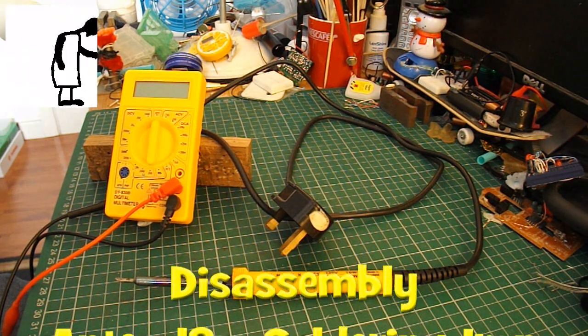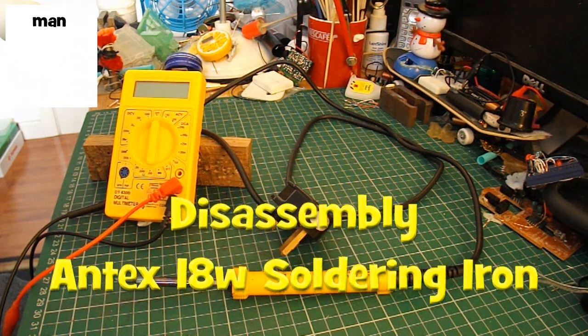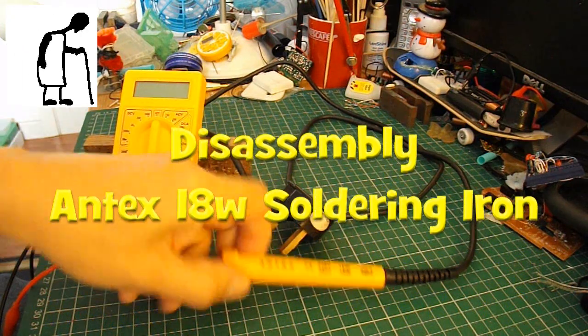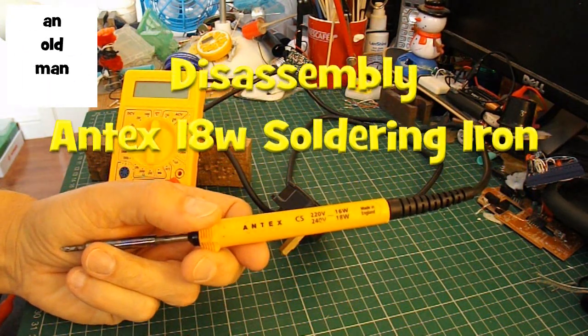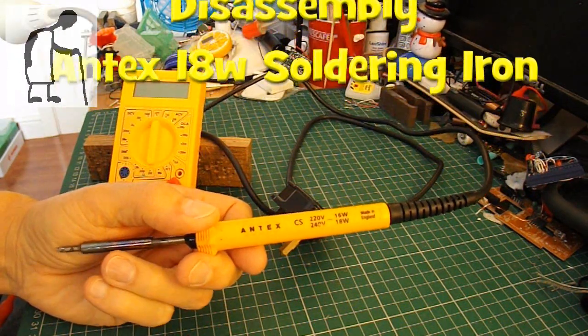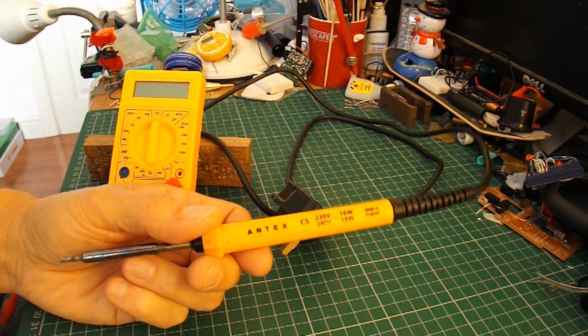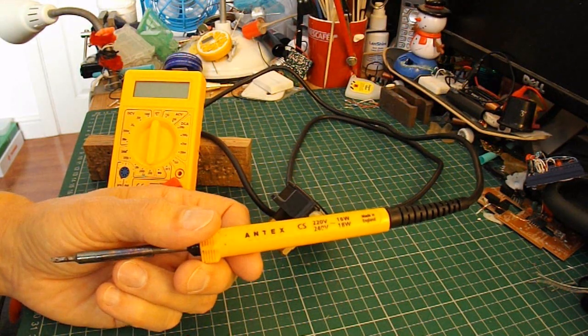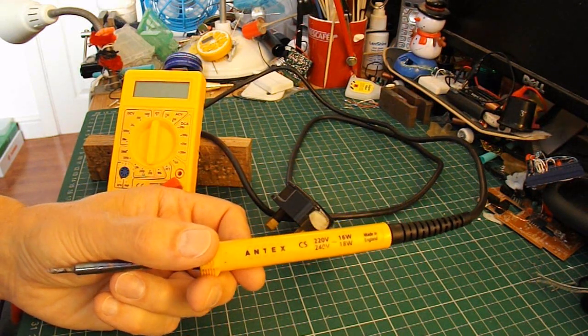Hi guys, I'm going to do a disassembly video. My favorite soldering iron has stopped working. I've already checked it and it's actually the heater element that's gone. But I'll run through the basic checks anyway.